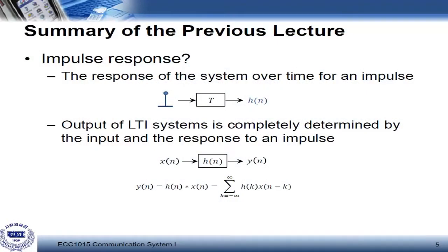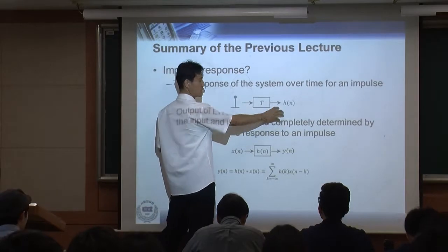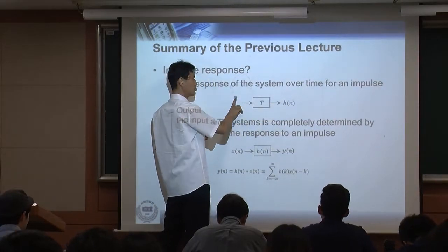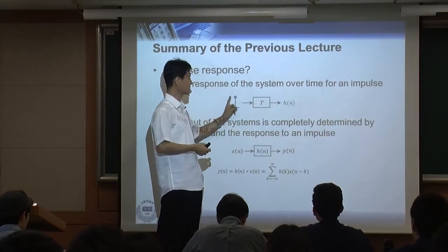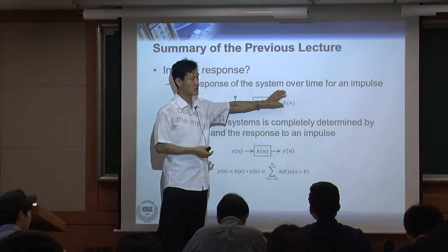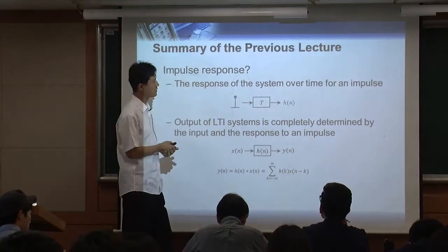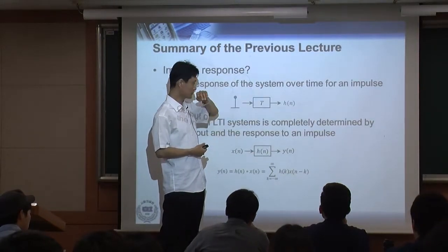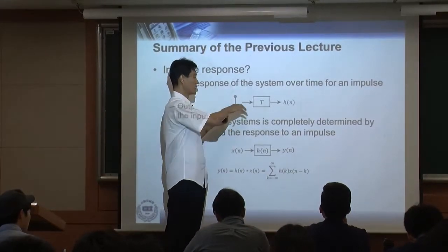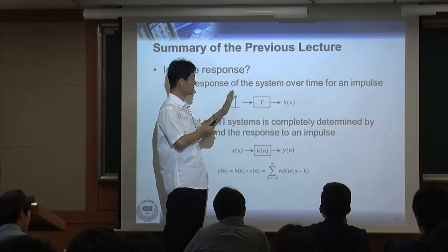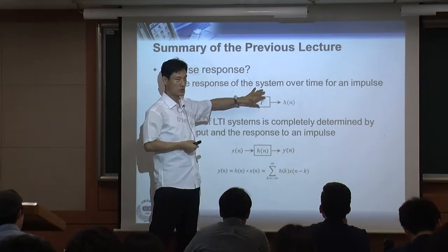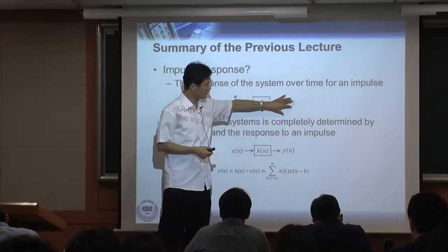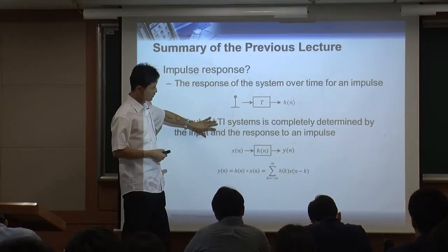Another basic terminology is the impulse response. As the name says, impulse response is the characteristic of a system. When you put the impulse into the system you get a certain response — that's the impulse response h(n). Once you know the impulse response, we can say we know everything about this block. It's basically a black box and once you put the impulse in and get h(n), you know everything inside.